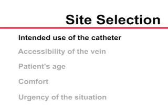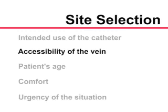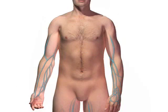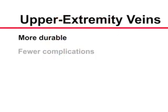Choosing a site for intravenous cannulation depends on many factors, including the intended use of the catheter, accessibility of the vein relative to the position of the patient, the patient's age and comfort, and the urgency of the situation. In general, upper extremity veins are preferred, as they are more durable and are associated with fewer complications compared with lower extremity veins.